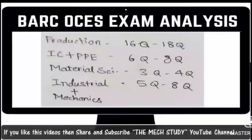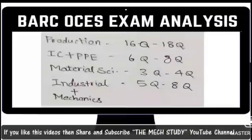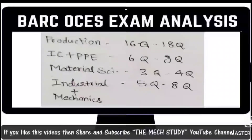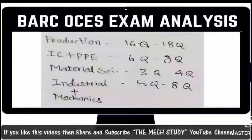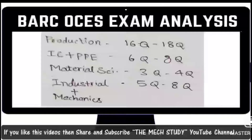In Production, most questions will be about welding and casting — numerical type questions. A few questions will also come from forming. The difference is that only the data changes from GATE numericals; everything else remains the same. You just need to remember the formula and substitute the values to get the final answer. A few theoretical questions will come from metrology, and one to two numerical questions from forming.